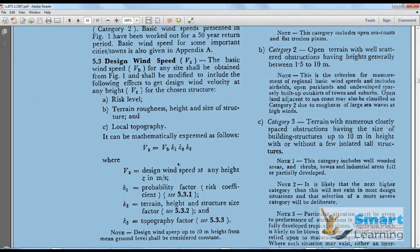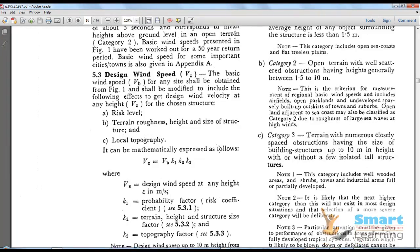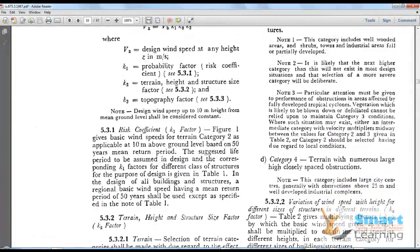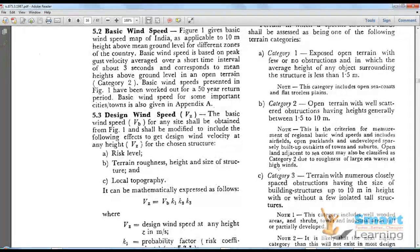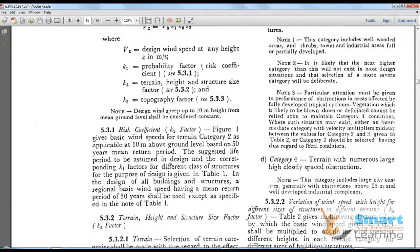VZ is the design wind speed at any height Z in meters per second. K1 is the probability factor or risk coefficient, K2 is the terrain height and structure size factor which you will get in tables, and K3 is the topographic factor. When you multiply these you get VB, the basic wind speed. You have different terrain categories: Category 1 is exposed open terrain with few or no obstructions where average height of any object is less than 1.5 meters. Category 2 is open terrain with well scattered obstructions having height generally between 1.5 to 10 meters. Category 3 is terrain with numerous closely spaced obstructions having the size of building structures up to 10 meters in height.